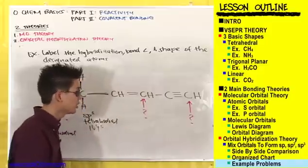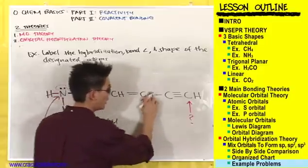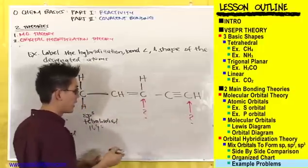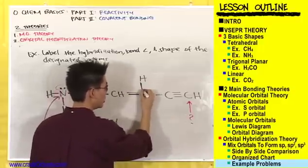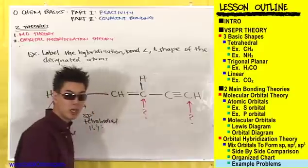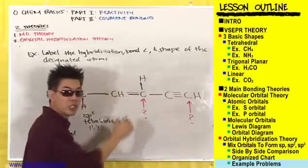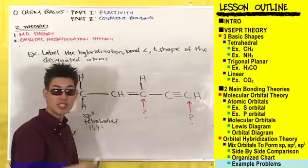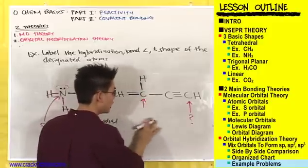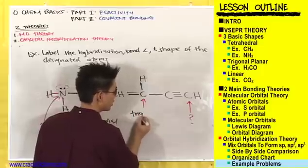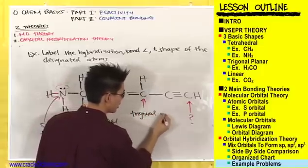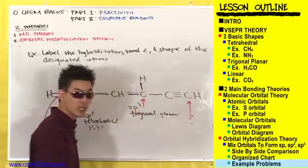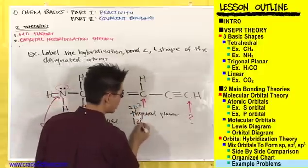Let's look at this next carbon. If it trips you up, draw out the hydrogen's bond. This carbon has one, two, three sigma bonds and one pi bond — but you ignore pi bonds. With three sigma bonds, it's trigonal planar with sp2 hybridization and bond angles of 120 degrees.